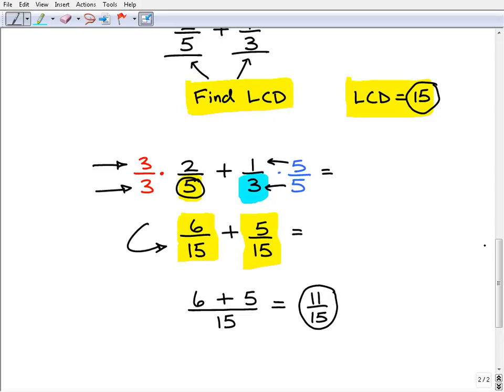Okay, so now we have the new fraction or the new problem 6 over 15 plus 5 over 15 and then of course when you have fractions that have the same denominator, all you have to do is add the numerator. So we have 6 plus 5 and of course is 11 and we have our same denominator 15, 11 fifteenths.